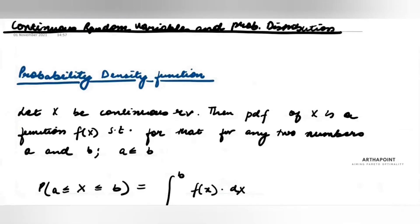Good afternoon. In today's lecture I'm going to begin with continuous random variables. Till now we have always been doing discrete random variables. A discrete random variable is any variable where you can only give it discrete values — integer values. You cannot give a discrete random variable continuous values; it can be one, two, three and so on, but it is not continuous in nature.